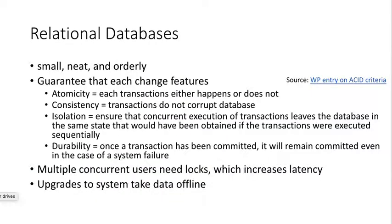Relational databases are pretty useful if we have well-structured data that fits on a single computer. The reason they're orderly is because we can guarantee certain features about that data — specifically when making transformations, how stable the database is — that's called the ACID criteria. They can be a little bit slow and fragile if you need to make changes to the system.